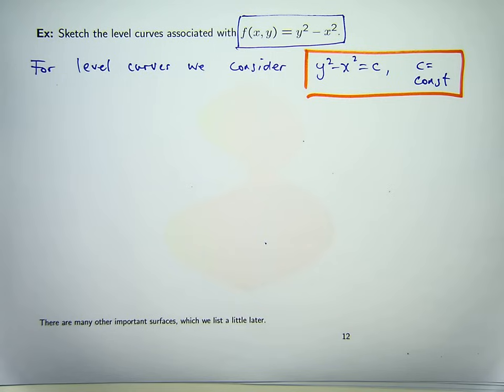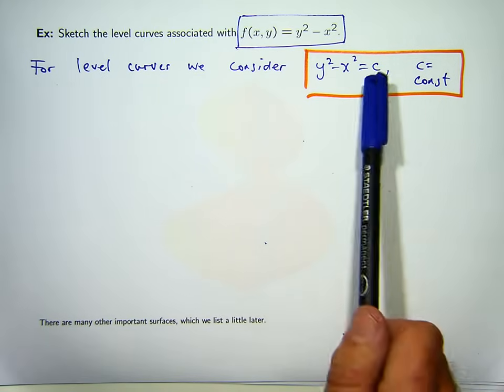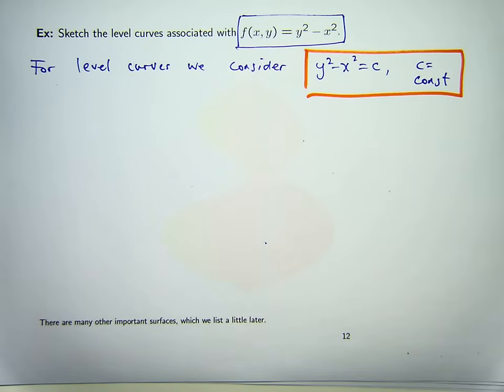So, in this case, I can take all sorts of values for C, there's no restriction on C. So what I'm going to do is just choose an easy starting point, say C equals 0, C equals 1, C equals minus 1, C equals 2, C equals minus 2. Those five curves should give you some idea or the five curves associated with those values should give you some idea of what's happening. We should be able to draw the level curves from that.